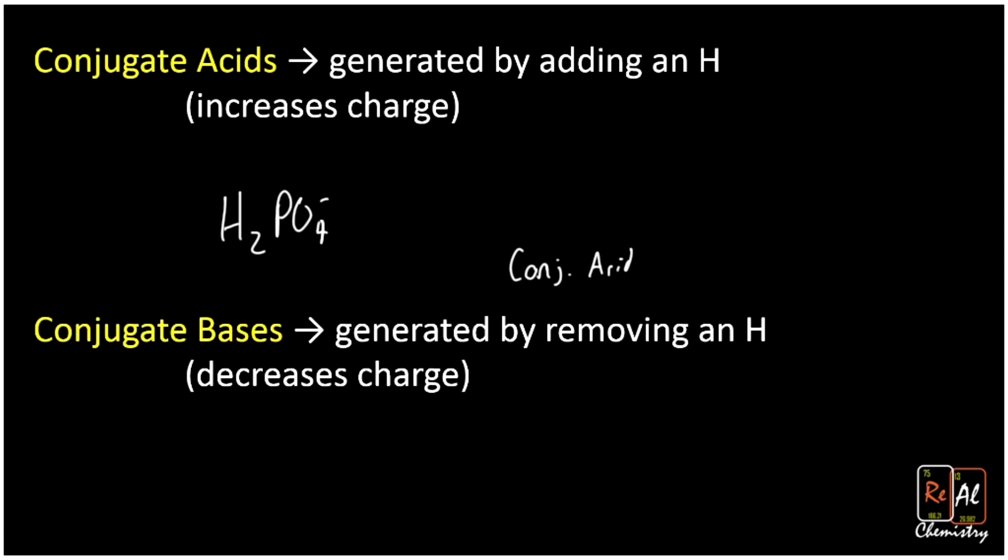Well, the conjugate acid is generated by adding an H. So we got to add an H, which would give me H3PO4. Now what's the charge? Well, before it was negative one, and then I added plus one to it. And negative one plus one gives me zero. So that actually is a neutral charge there.